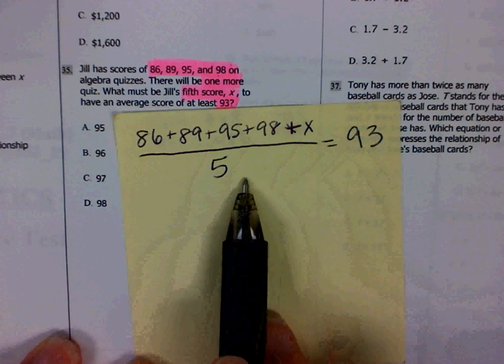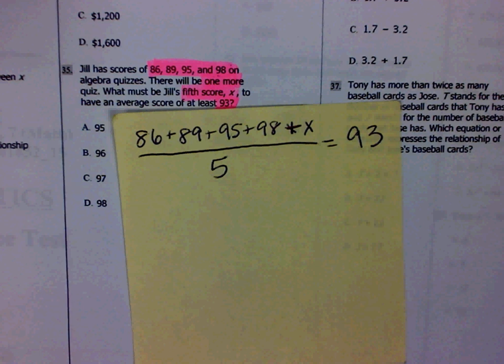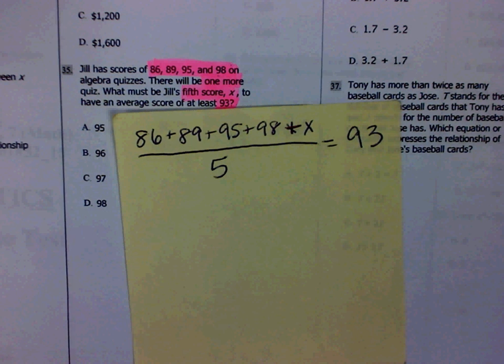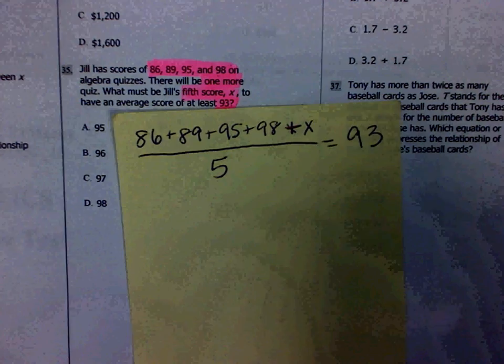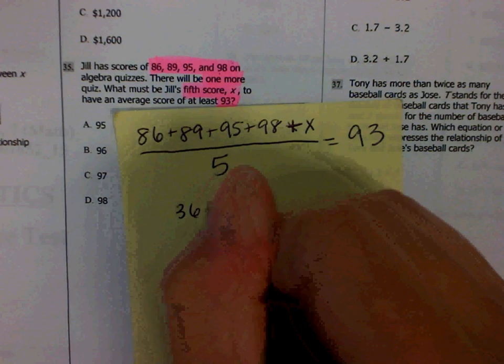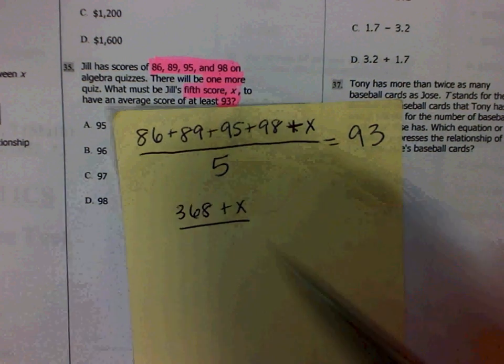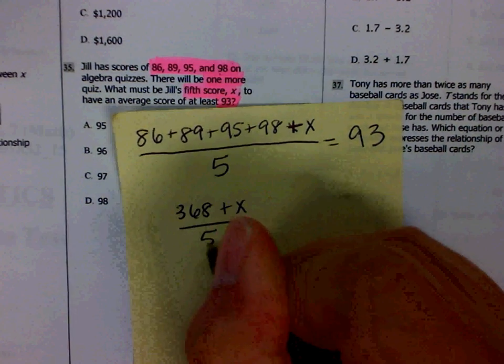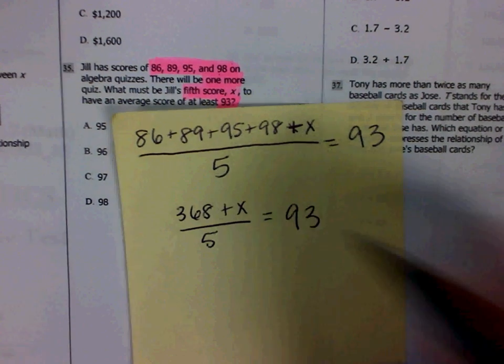Now all you have to do is solve this multi-step equation. The first thing you're going to want to do is simplify the top of that fraction. If I add all of those values up, I get 368. So I'm going to simplify this to be 368 plus X divided by 5 equals 93.